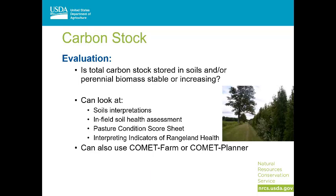Our carbon stock resource concern component is focused on the greenhouse gas resource concern and particularly on carbon sequestration. We want to evaluate whether the producer is either maintaining or increasing the carbon stored in soils and perennial biomass on their land. We can use tools like Comet Farm or Comet Planner to make that determination, or we have other methods like looking at soils data and interpretations for carbon sequestration potential and organic matter depletion potential in conjunction with an in-field soil health assessment, or using elements of the pasture condition score and rangeland health indicators for those land uses. There are a whole host of NRCS conservation practices that can be applied to increase biomass and carbon in soils if needed.